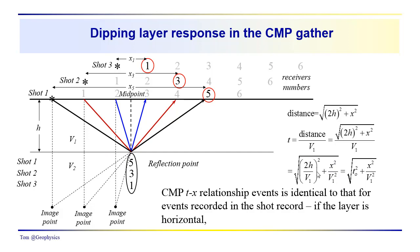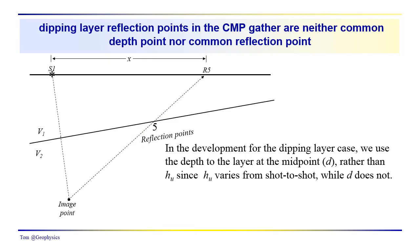For the time-distance relationship in the common midpoint gather, this is just another hyperbola — we have this identical relationship. Just a few reminders: we had some combinations of shots and receivers that fell into even and odd groupings of receivers. So we have a one, three, five combination of records that provide information about the reflection events from a common midpoint. It's a common reflection point, common depth point, and common midpoint — but only for the horizontal layer case.